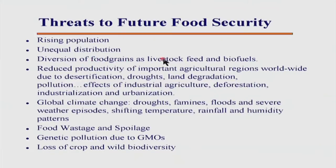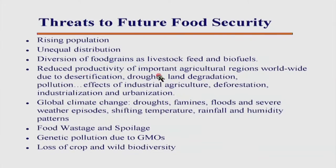Unequal distribution and the diversion of food grains to livestock feed or biofuel is a key issue. Meat consumption requires more land because the livestock feeds on the land and you feed on the livestock — you become a secondary consumer instead of a primary consumer. Recalling the trophic pyramid, which is pyramidal in shape, biomass and energy are wasted as you go from one trophic level to another.